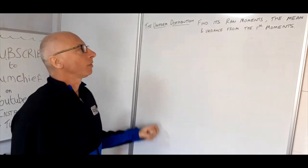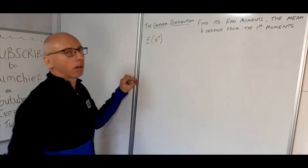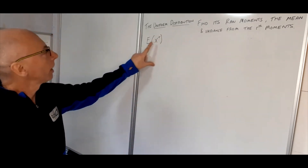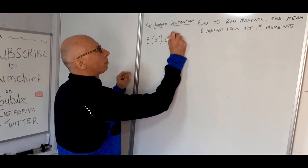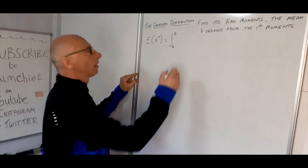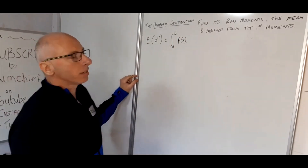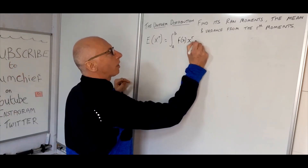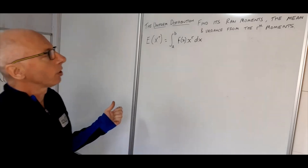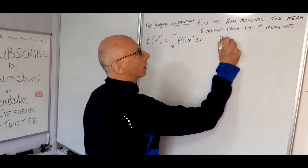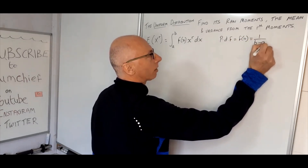First of all, let's look at the formula for raw moments. We call this the expected value of x to the r, where r is our raw moment — the expected value of x^r. This is an integral which ranges from parameters a to b, where b is larger than a. We have f(x), which is our PDF, and to calculate our raw moments we plug in x to the power of r and integrate with respect to x. For the uniform distribution, our PDF, f(x), is simply 1 over b minus a.